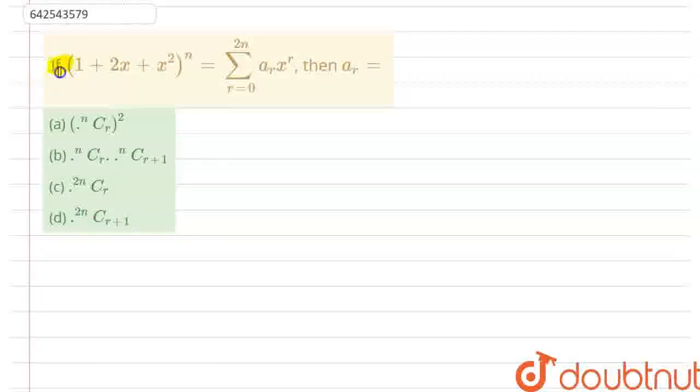In this question, it is given that if (1 + 2x + x²)ⁿ equals summation r equals 0 to 2n of aᵣxʳ, then we need to find the value of aᵣ.